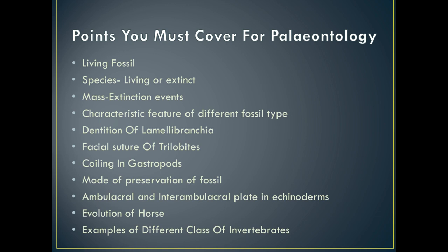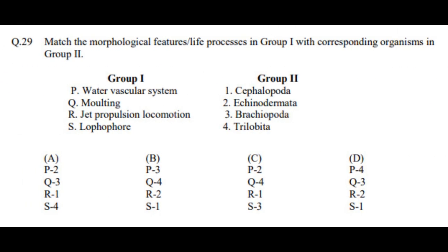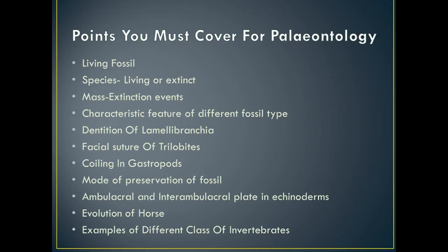Next is the Characteristic Features of Different Fossil Types. For example, there is a match-the-column question where characteristics of groups are marked in group 1 and corresponding fossil types in group 2. In another example, you match morphological features or life processes in group 1 with corresponding organisms in group 2. So whenever you are reading any particular phylum or class, make sure to mark its unique features, because such questions have been asked in previous years. Next is the Dentition of Lamellibranchia, which is very important for JAM. Likewise, the facial suture of trilobites and the coiling in gastropods are important characteristics.